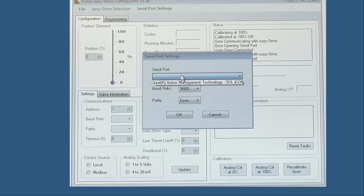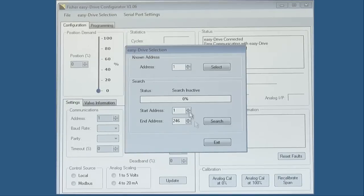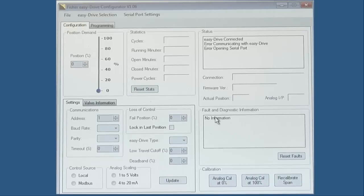Once that has been completed, use the correct baud rate for your device. Ours is 9600 and at an even parity. If the EZ-Drive is not connected, then go to EZ-Drive selection within the menu bar and search for the EZ-Drive. If the EZ-Drive is not found, please contact your local Emerson sales office.